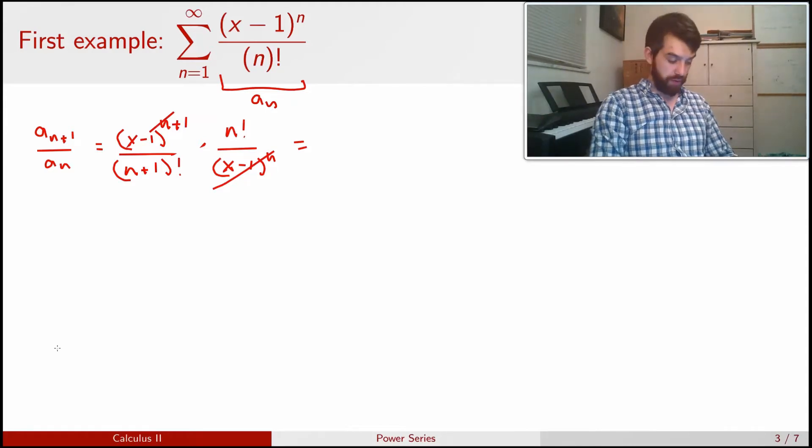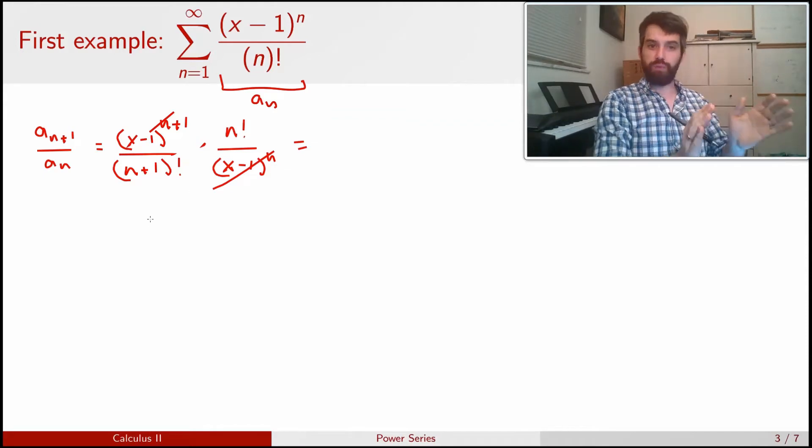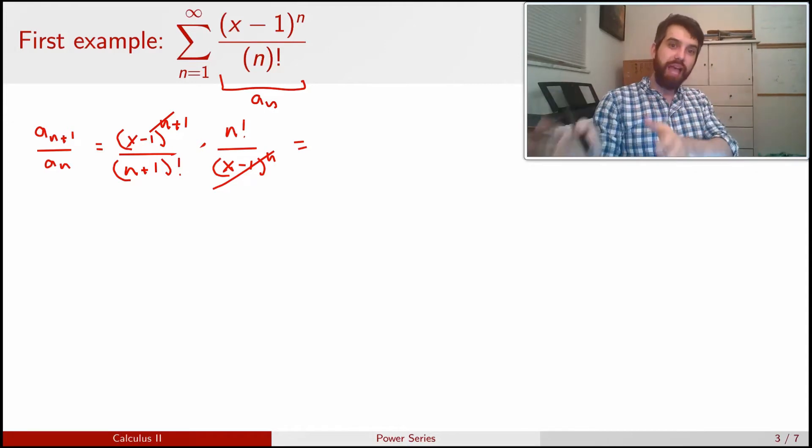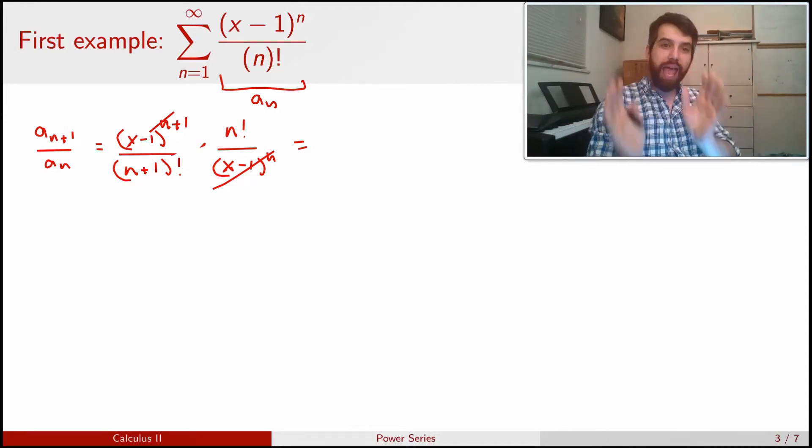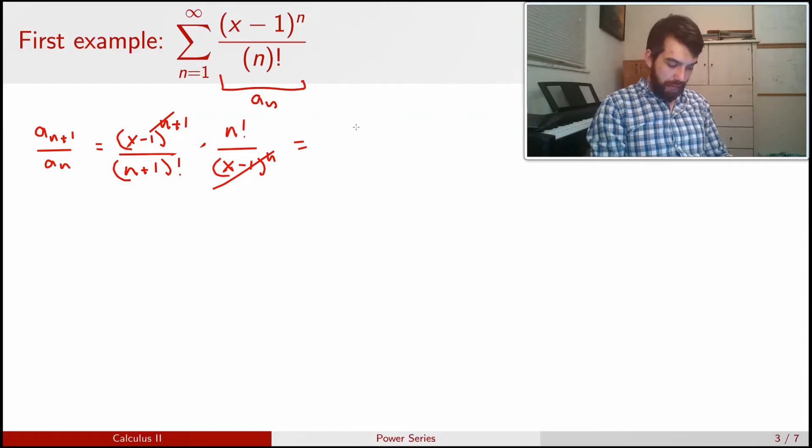And then I have some terms that are going to cancel. The (x - 1)^n is going to cancel off the n here. There's still one copy of (x - 1) on the top. And in (n + 1) factorial, I can write (n + 1) factorial as (n + 1) times n factorial. So what I'm left with is (x - 1) just to the power of 1, all divided out by just (n + 1).